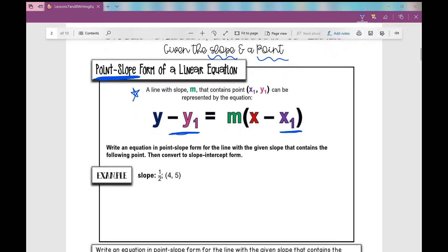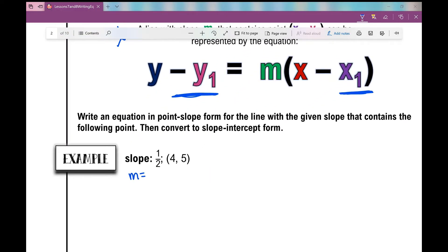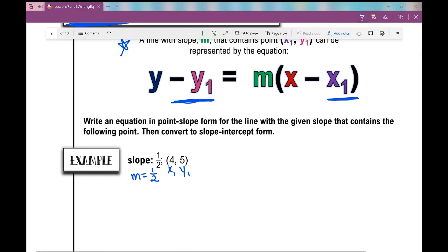So let's look at this first example. Write an equation in point-slope form for the line with the given slope that contains the following point, then convert to slope-intercept form. We're going to write the equation of the line that has a slope of 1 half, that's my m, and it passes through the point 4, 5. So x sub 1, y sub 1. Let's just plug those in to my formula. y minus the y value equals the slope, which is 1 half, times x minus the x value, which is 4. And that's all you have to do.